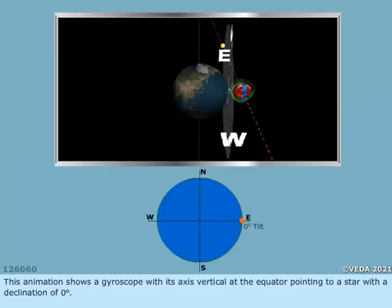This animation shows a gyroscope with its axis vertical at the equator pointing to a star with a declination of 0 degrees.